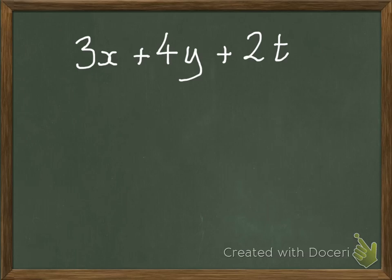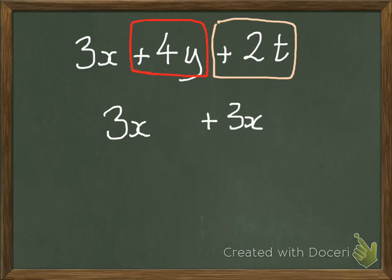Something else I think we need to just highlight is what sign belongs to which thing. So we've got 3x plus 4y plus 2t. Where does that plus belong to? Well, the plus is all, the sign, because it could be plus or minus, is always in front of the term that it applies to. So in that case it's plus 4y and it's plus 2t.